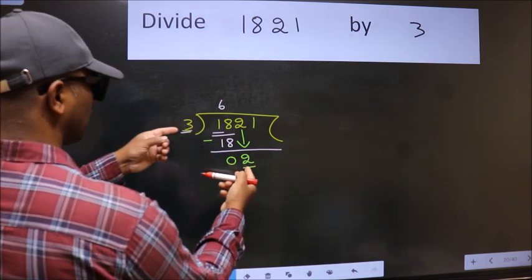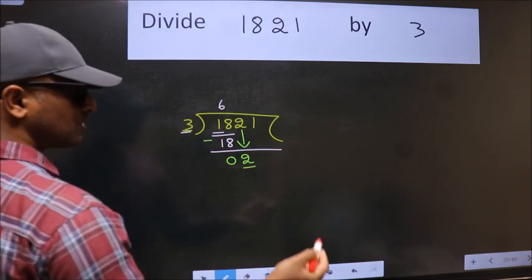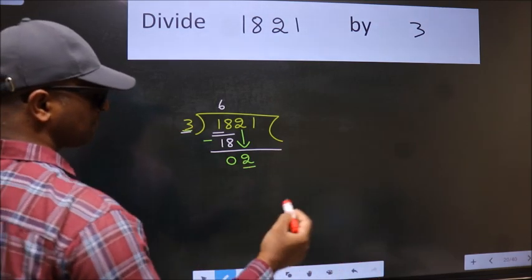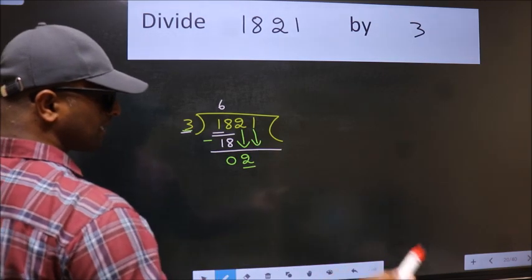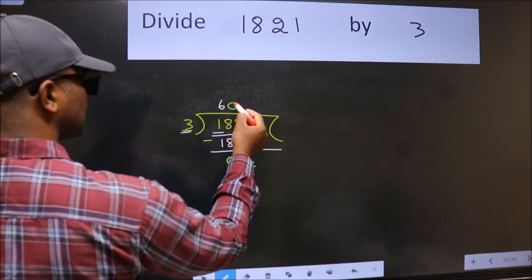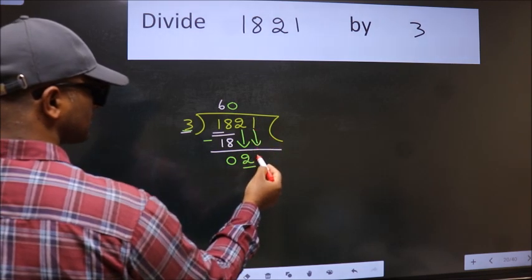2 is smaller than 3. So we should bring down the second number. And the rule to bring down the second number is put 0 here. Then only we can bring this number down.